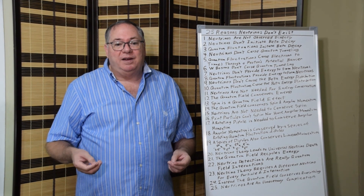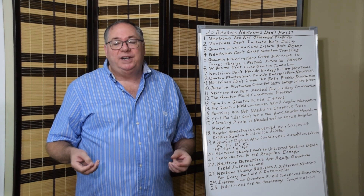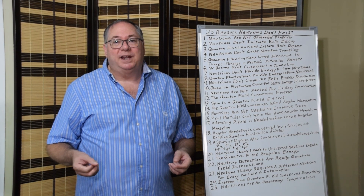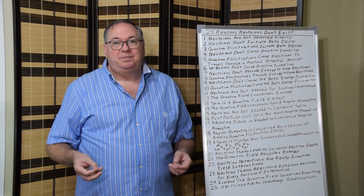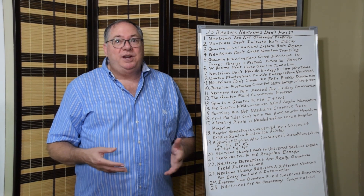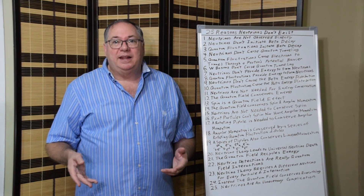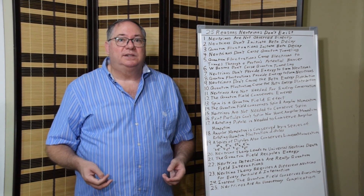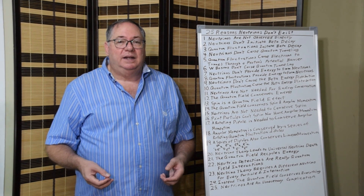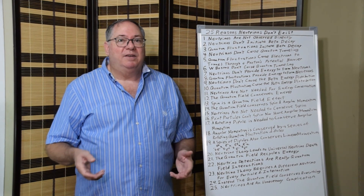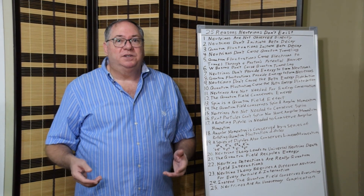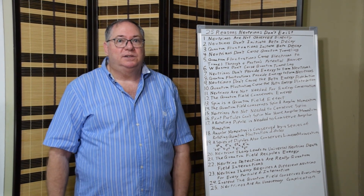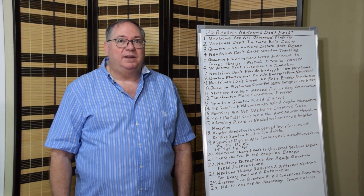Twenty-five, neutrinos are an unnecessary complication. They really don't do anything in the end. If you really do your analysis of the physics, there's nothing left for neutrinos to do because quantum fluctuations have done everything.